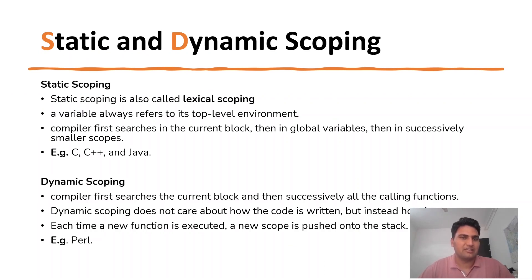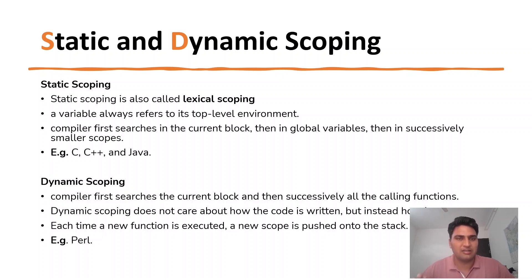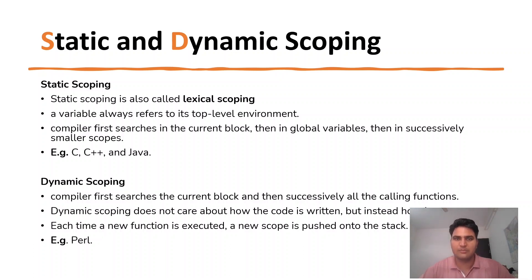Static scoping. Languages like C, C++ and Java use static scoping. We will also talk about lexical scoping — don't be confused. If someone asks in an interview what is lexical scoping, we are talking about the same thing as static scoping. What happens is that a variable always refers to its top-level environment, like a global variable. If we define a variable in the top-level environment, we refer to the top-level environment.